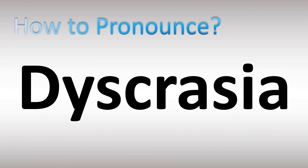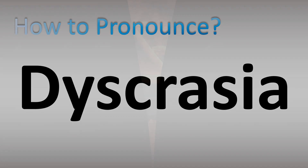How do you pronounce this name from medicine? An abnormal state of the body. Two different ways of pronouncing it. The first pronunciation is dyscrasia. Dyscrasia. Some also pronounce it as dyscrasia.